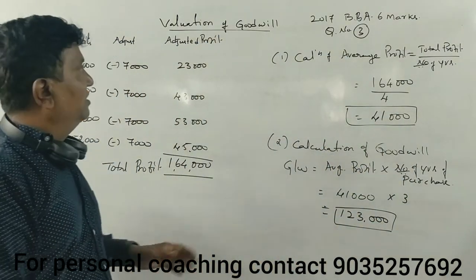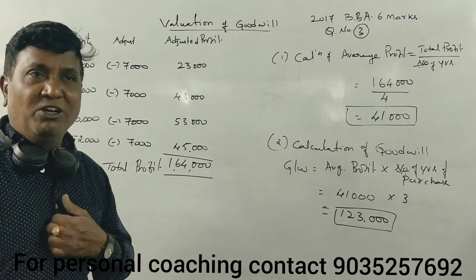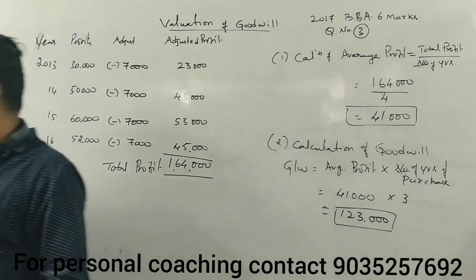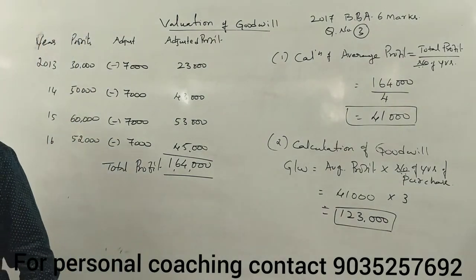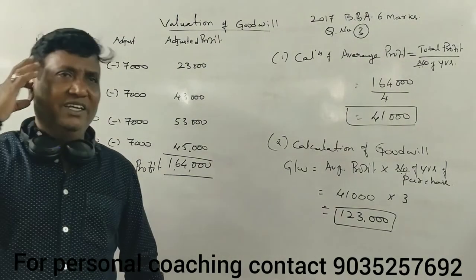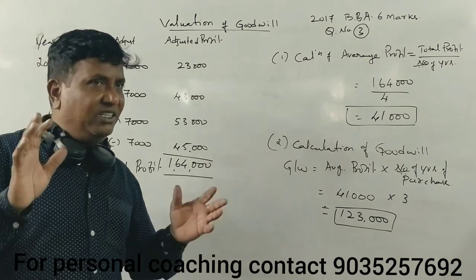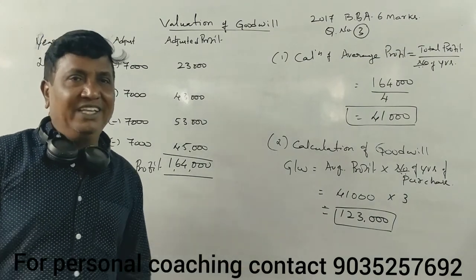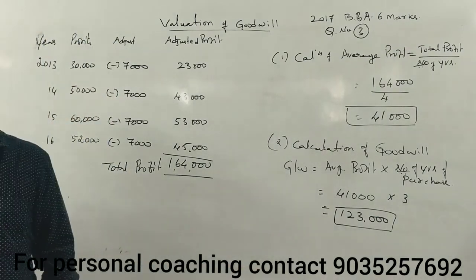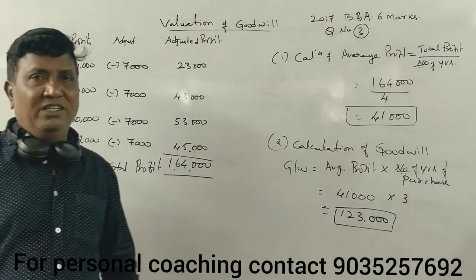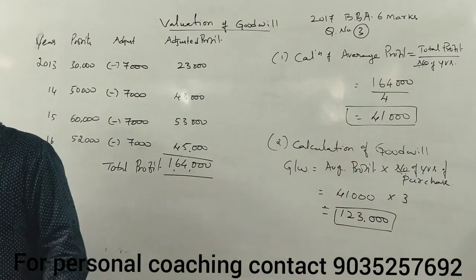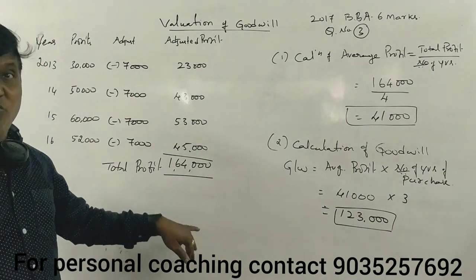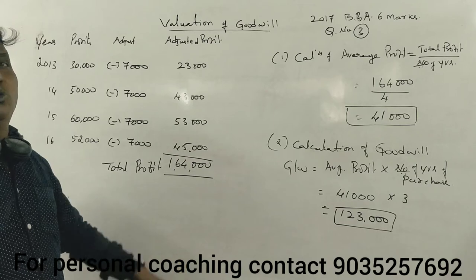Clear? Easy. This is 6 marks. We are going to do the cost — it is easy. 3 years purchase. 4 years of profit, average profit is 3 years purchase. That is what we want to do.